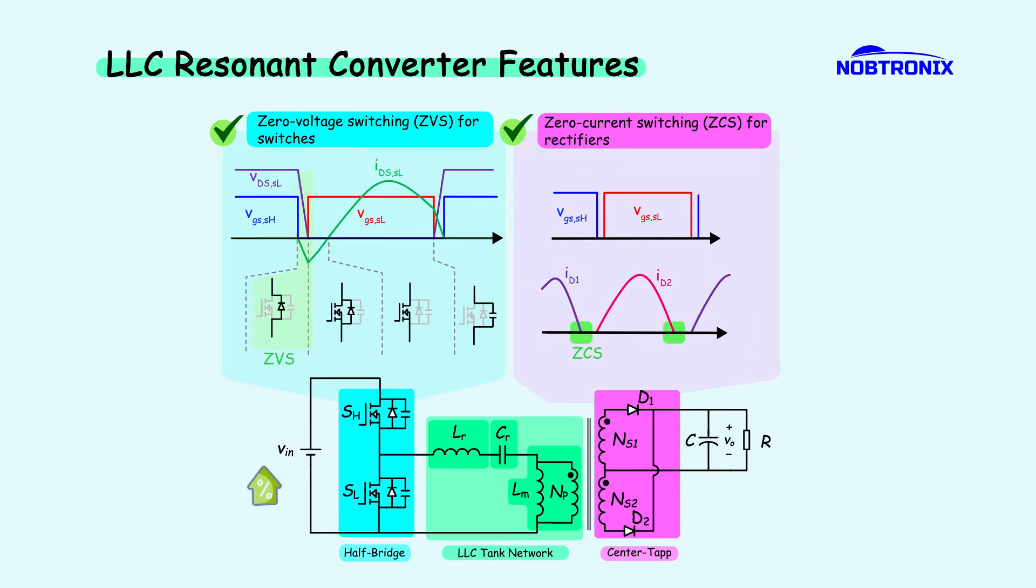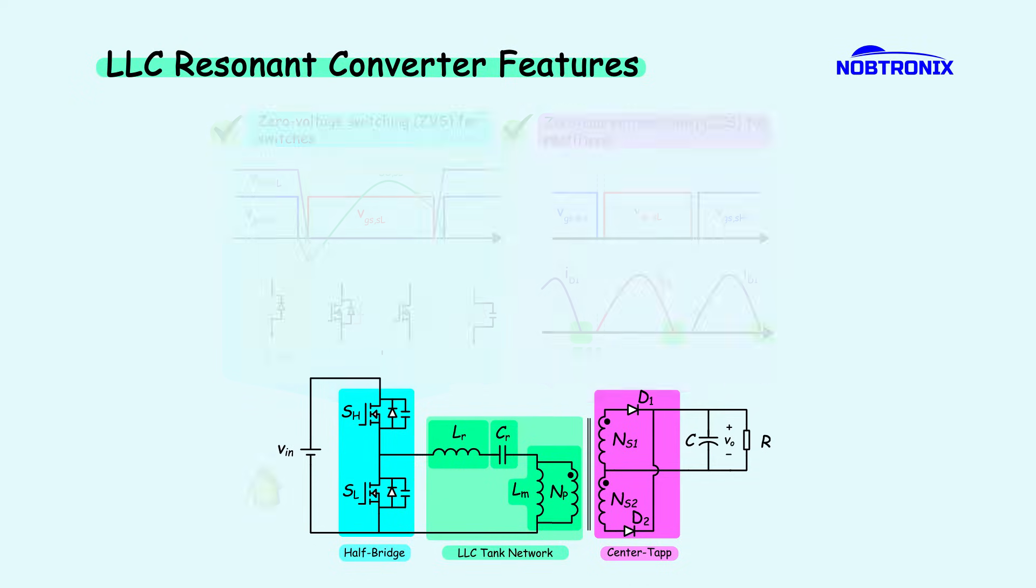For the diodes, operating below the resonant frequency enables zero-current switching. In this mode, the current naturally falls to zero before switching occurs, eliminating reverse recovery losses. As a result, power dissipation is minimized, and EMI noise is significantly reduced, leading to a more stable and efficient power conversion process.